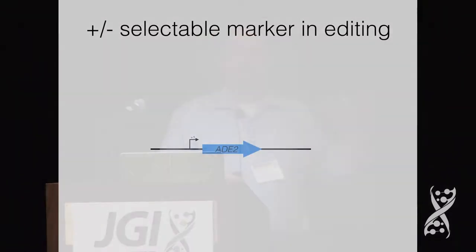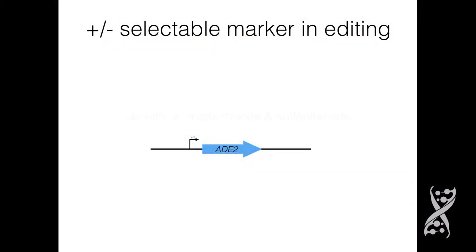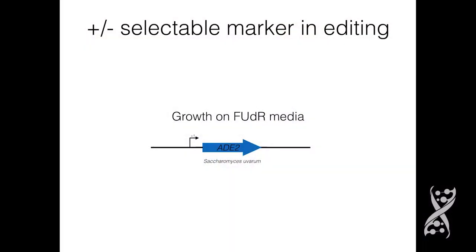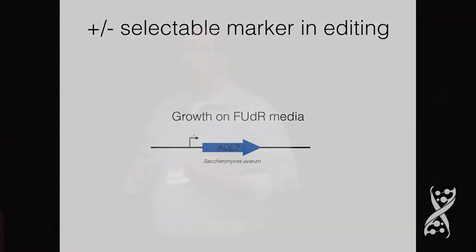I went to test this by deleting the ADE2 gene in Saccharomyces cerevisiae and replacing it with the ADE2 gene from Saccharomyces uvarum, which are the two most distant relatives of the Saccharomyces species. I chose that because you can easily see a uvarum sequence in cerevisiae because of the high divergence, which rules out contamination. Just like the URA3 system, I deleted the native copy with thymidine kinase and then replaced thymidine kinase with the Saccharomyces uvarum ADE2 sequence by selecting on FUDR media. Many of the clones obtained contained the Saccharomyces uvarum sequence, though I did have a lot of false positives as expected.